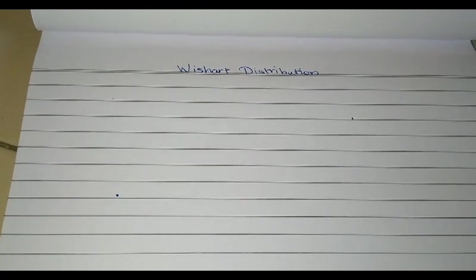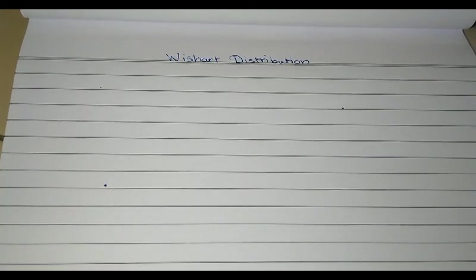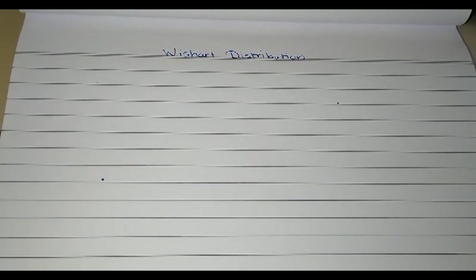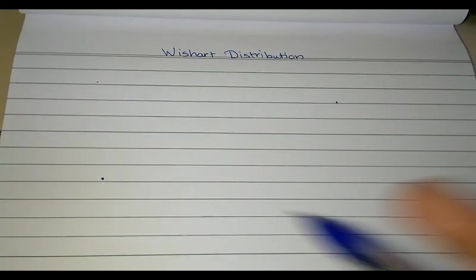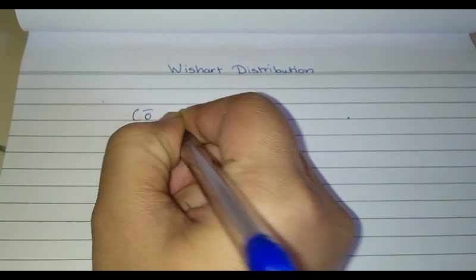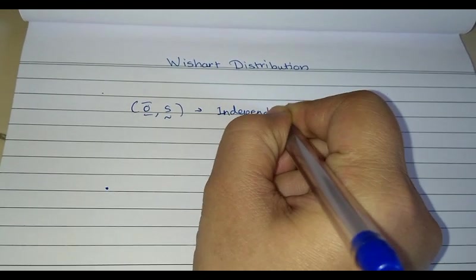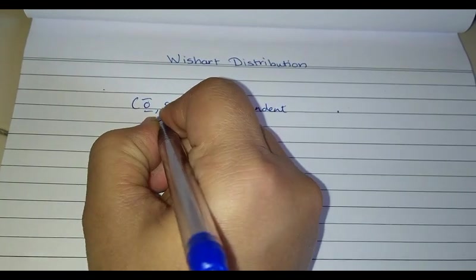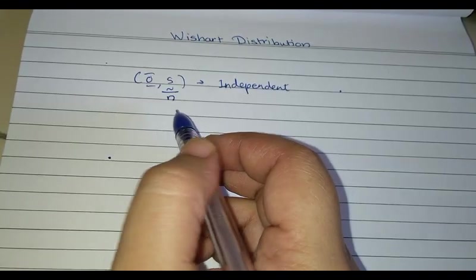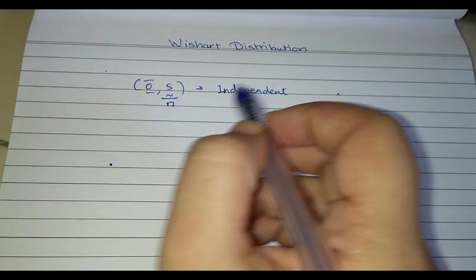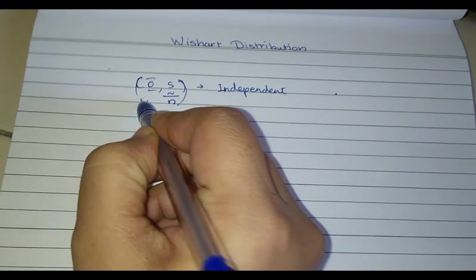Today we will be continuing our discussion on sampling distribution of X-bar and the CSSP matrix. What we have proved so far is that the two estimators — sample mean and the sample CSSP matrix — are independent. This also tells us that X-bar and S/N are also independent. But the discussion of sampling distribution does not stop at independence; we would of course need to know what is the probability distribution of each of them.